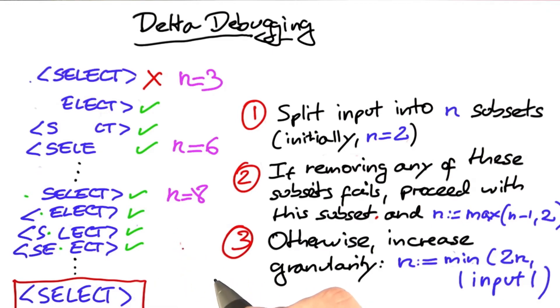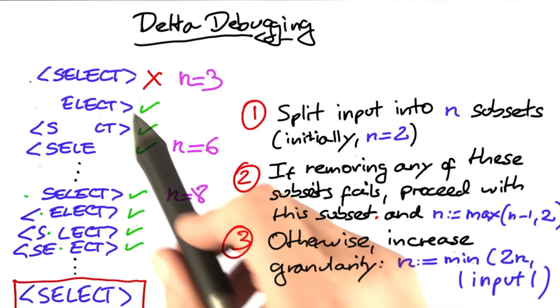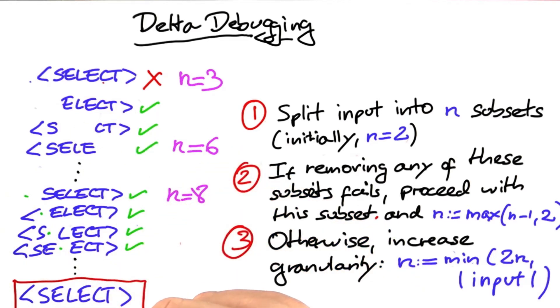At this point you may wonder, how many tests does delta debugging actually take? You can see that at the very end, when every single character has to be removed individually, the number of tests, of course, is proportional to the length of the simplified input.